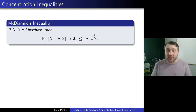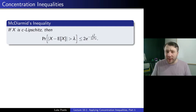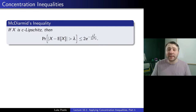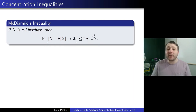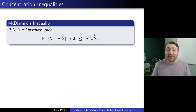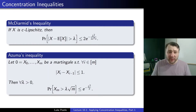So what are concentration inequalities? To remind you from last time, the ones we'll be using today are McDiarmid's inequality, which said: if a random variable X is c-Lipschitz, then it's concentrated around its expectation in the sense that the probability of |X − E[X]| being greater than λ is at most 2e^{−λ²/(2c²n)}, where n is the number of independent trials that X depends on.